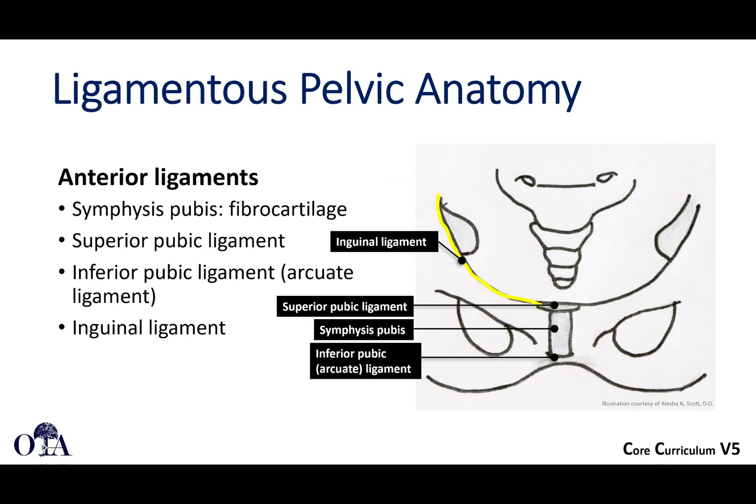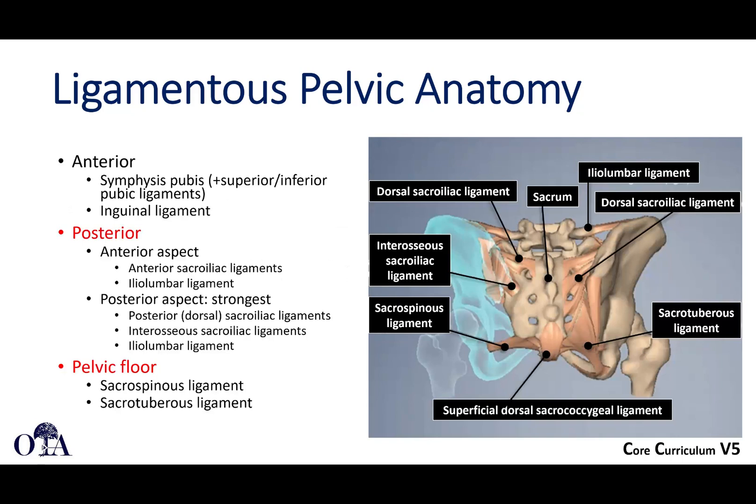Looking more closely at the anterior ligaments, you have the symphysis pubis, which is fibrocartilage, the superior pubic ligament, and the inferior pubic ligament, and then the inguinal ligament. In a posterior view, you can see the posterior interosseous and posterior sacroiliac ligaments, made up of the posterior sacroiliac ligaments, interosseous sacroiliac ligaments, and the iliolumbar ligament. You can also see the pelvic floor — sacrotuberous and sacrospinous ligaments — shown in this image from posteriorly.